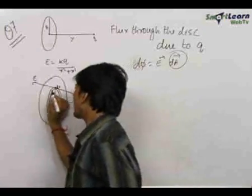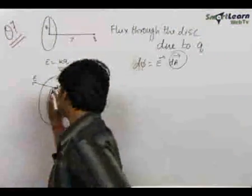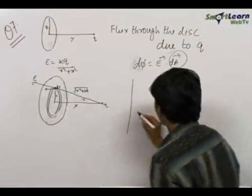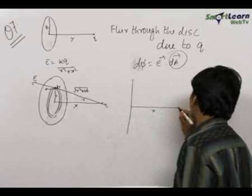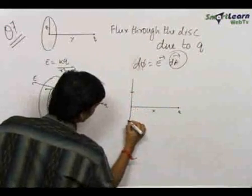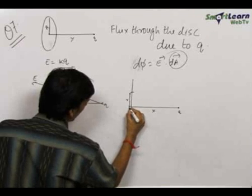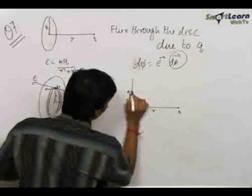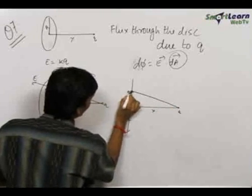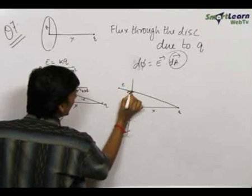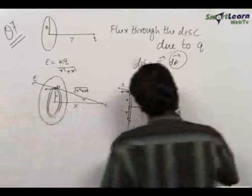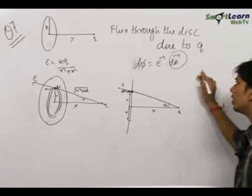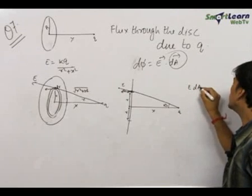The area vector is always perpendicular to the area concerned. Looking at the side view of the disk, at a distance x we have charge q, at distance small r we have the ring with thickness dr. The electric field points in a certain direction and the area vector is perpendicular to the ring surface, making an angle theta between them.